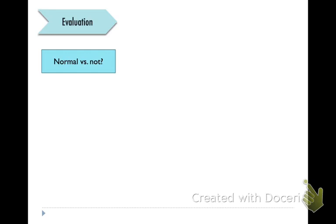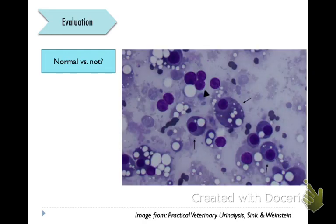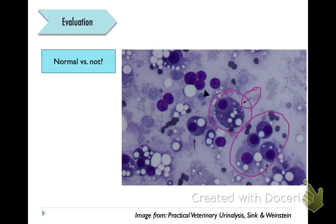If you're evaluating and you're asking first if it's normal versus not normal, you have to think about the location you're in and think about whether what you're seeing in that location is actually just resident populations of cells. This is a kidney aspirate and these arrows are pointing to normal renal tubular epithelial cells that can be seen when you aspirate the kidney.